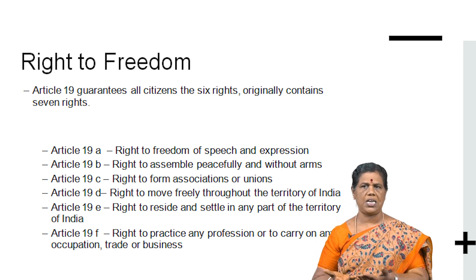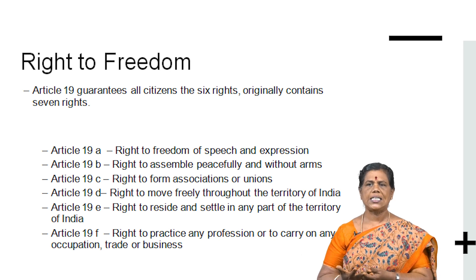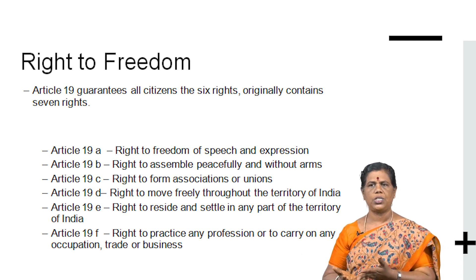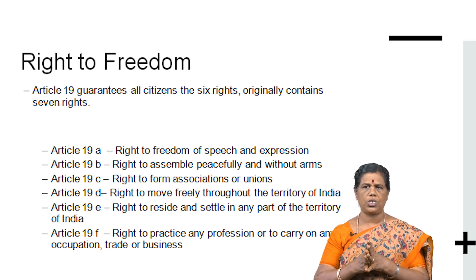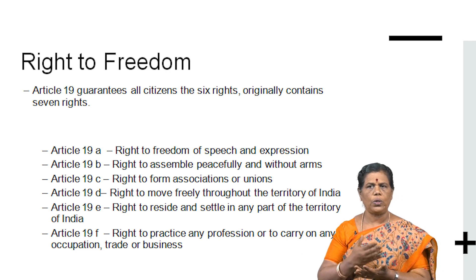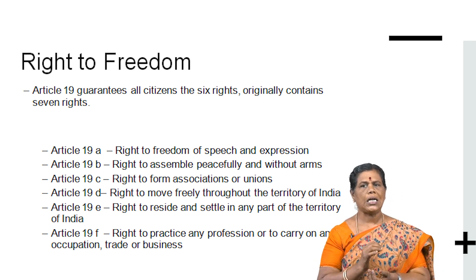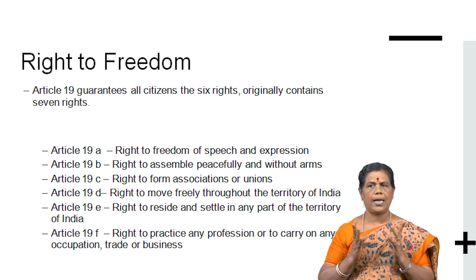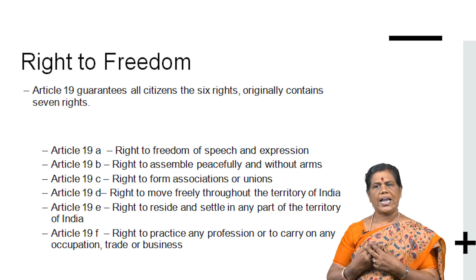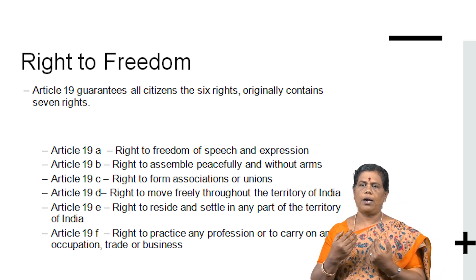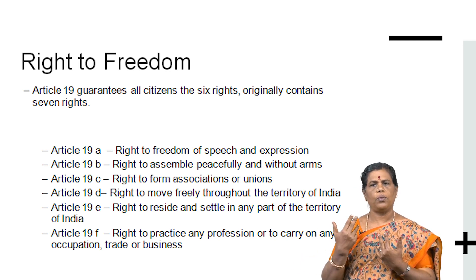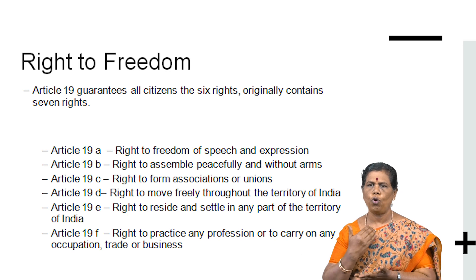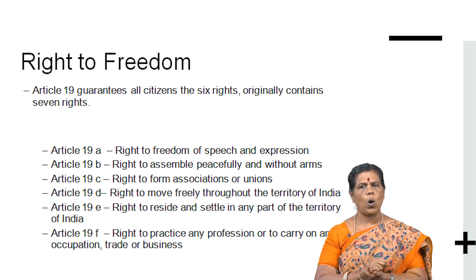Article 19C gives us the right to form associations or unions — for example, labour welfare unions and student associations. Through such associations, we have the right to express our views. Article 19D states that we have the right to move freely throughout the territory of India. We have the right to go to any place — that is the right to move freely, assured by Article 19.